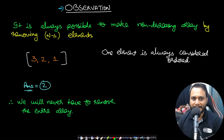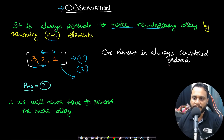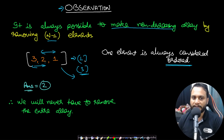The first observation is it is always possible to make the array non-decreasing by removing at most N minus 1 elements — we never need to remove the entire array. For a strictly decreasing array like '3 2 1', removing just two items leaves a single element, and a single element is always considered ordered, whether increasing, decreasing, non-increasing, or non-decreasing. The constraint also guarantees the array has at least one element.